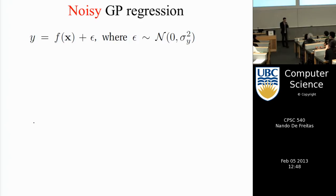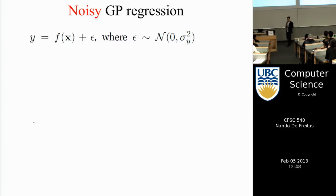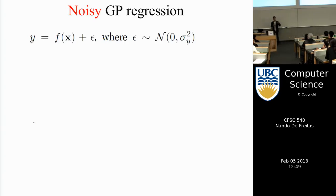Before getting into more detail on how to learn the kernel parameter, let's deal with a few other equally important things. The first is how to deal with noise. So far I assumed the function f didn't have noise. But sometimes when asking a question — like rating a country like Burundi — there may be uncertainty in the reply because they don't know what it looks like.